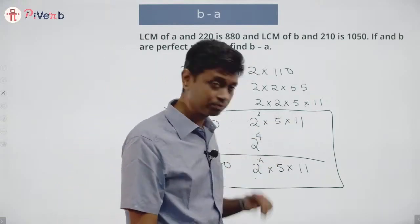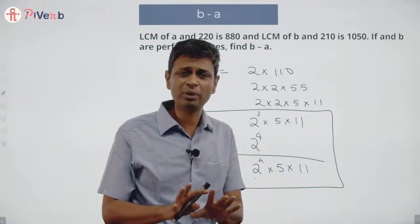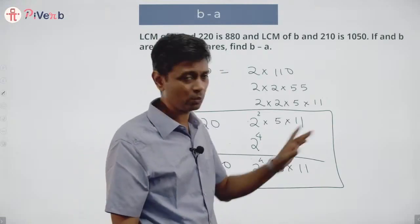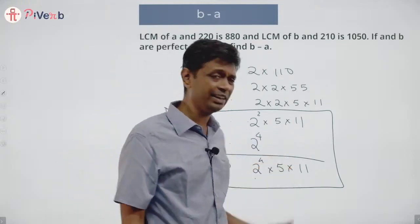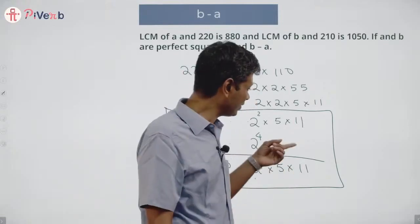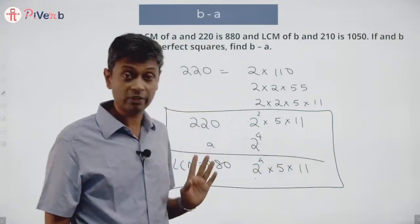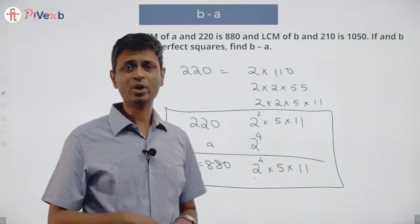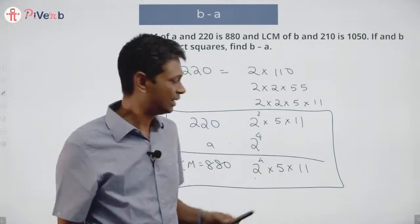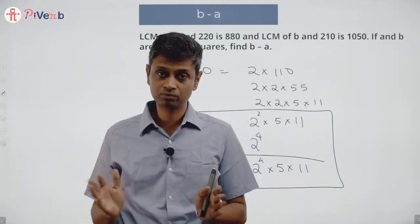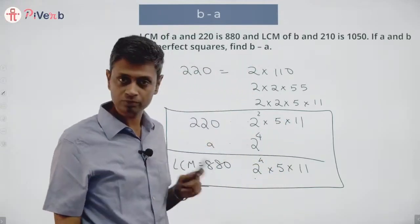For the factor 5: a could have 5¹, but a cannot have 5² because then the LCM would need at least 5². Similarly, a cannot have 11². The 5 and 11 in the LCM can come from 220, so a may or may not include 5 or 11. A cannot have any other prime — for example, if a had a factor of 7, the LCM would also have 7. So a has 2⁴ for sure, and optionally 5 and/or 11.